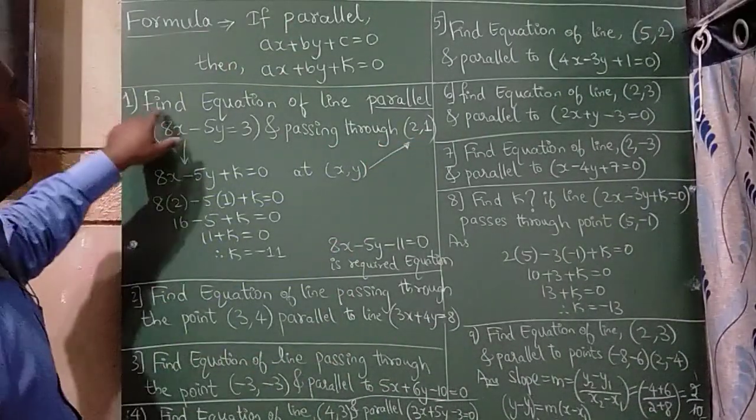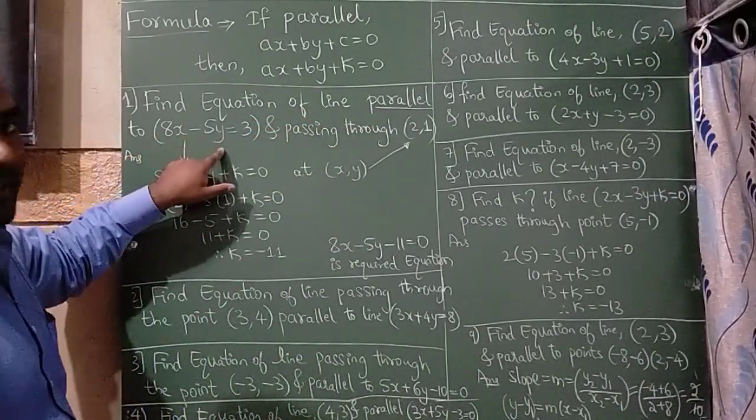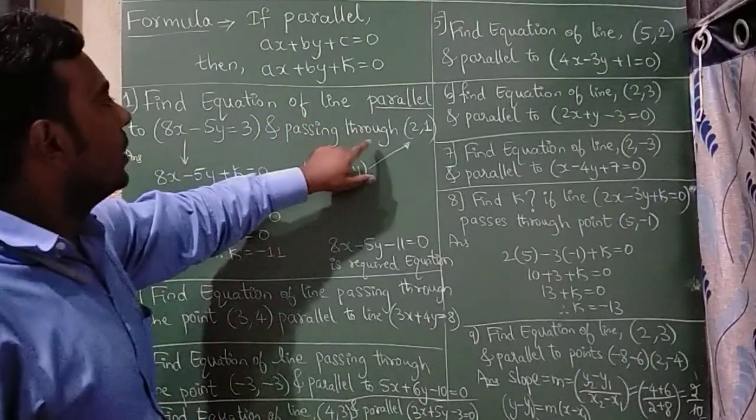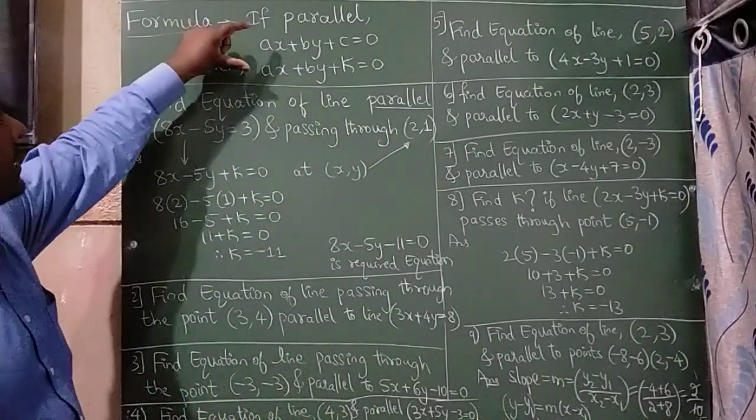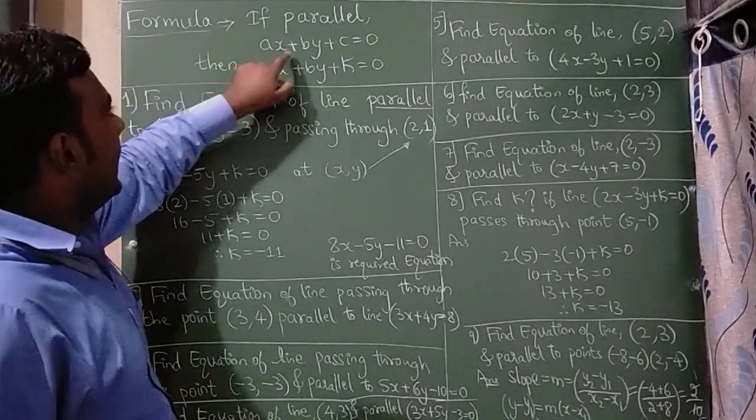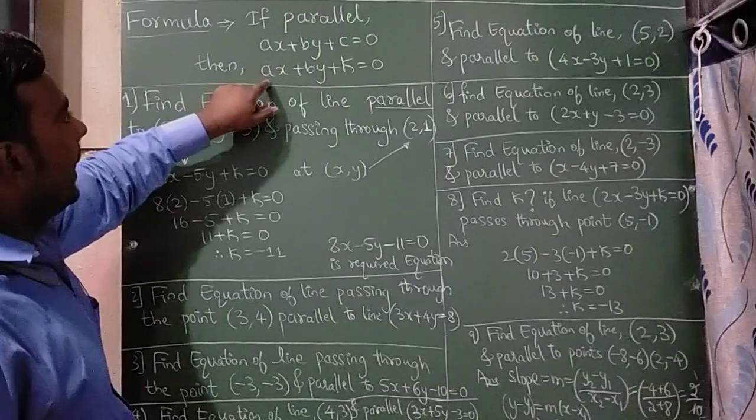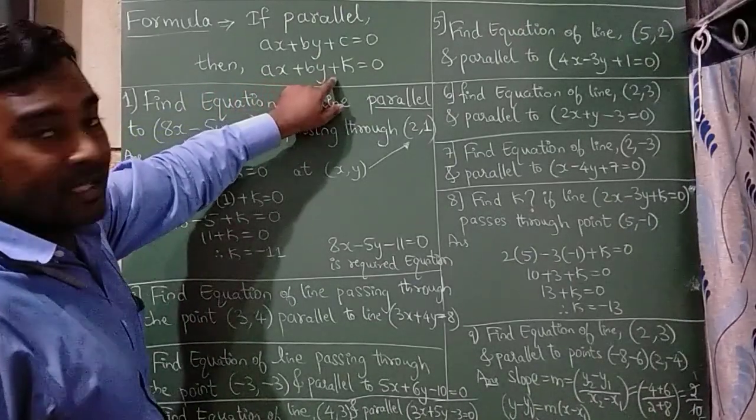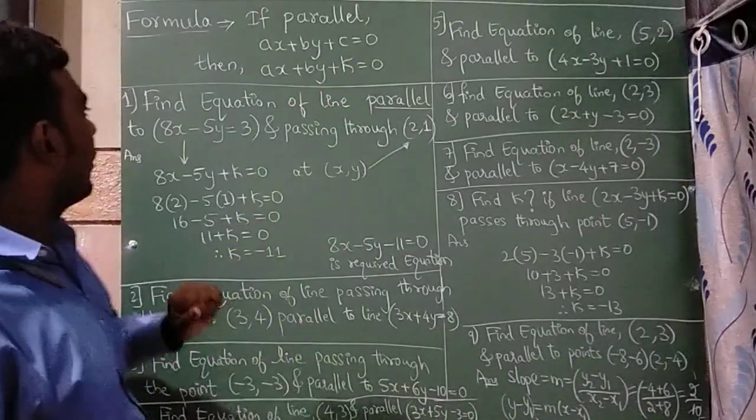So find the equation of the line parallel to 8x minus 5y is equal to 3 and passing through a point 2 comma 1. So here there is a formula if the given equation is ax plus by plus c is equal to 0 then we need to write ax plus by plus k is equal to 0.